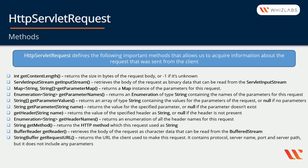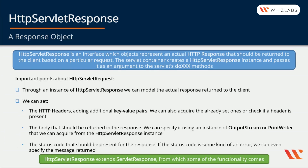There are more methods but we'll stick to those as they are quite enough for now. Let's continue with HttpServletResponse, which is an interface whose objects represent an actual HTTP response that should be returned to the client based on a particular request. The servlet container creates an HttpServletResponse instance and passes it to the servlet's DoX methods. Through an instance of HttpServletResponse we can model the actual response returned to the client. We can set HTTP headers, adding additional key-value pairs, acquire already set ones, or check if a header is present. We can specify the body to be returned using an OutputStream or PrintWriter. We can set the status code, and if it represents an error, we can even specify the message returned.